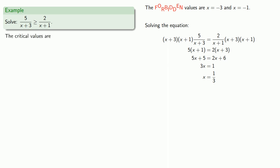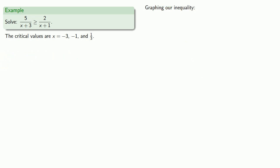The two forbidden values, negative 3 and negative 1, and the actual solution to the equality, 1 third. So let's begin by graphing our inequality. So first, we'll locate our critical points.